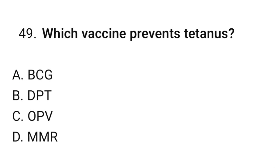Question number forty-nine: Which vaccine prevents tetanus? The correct option is B: DPT.